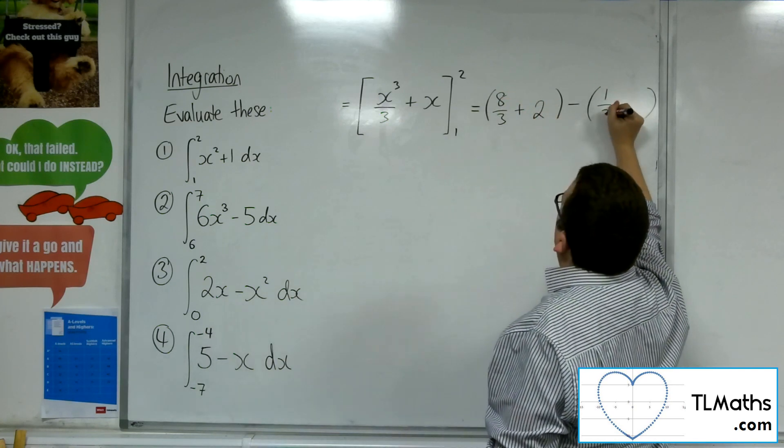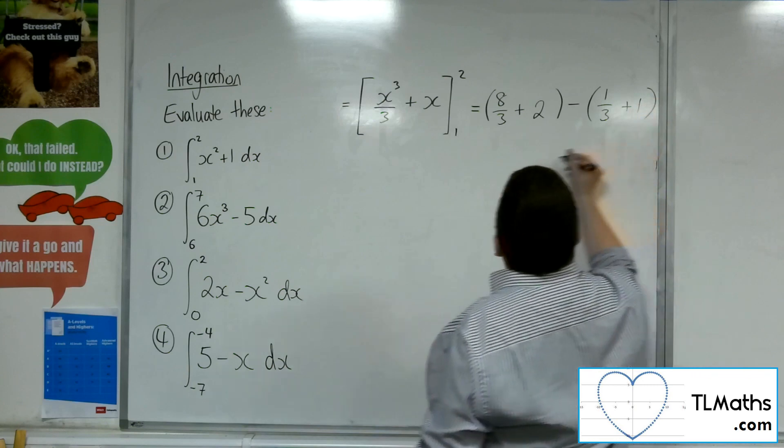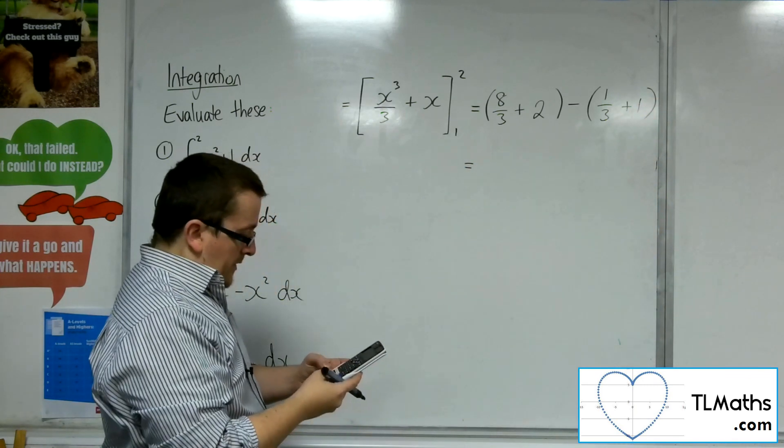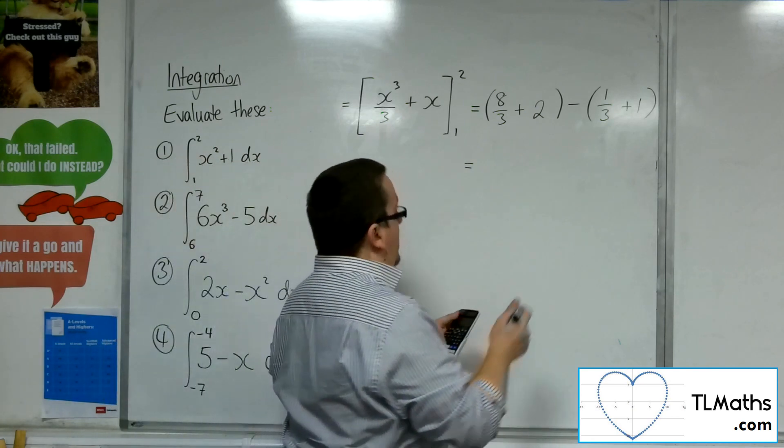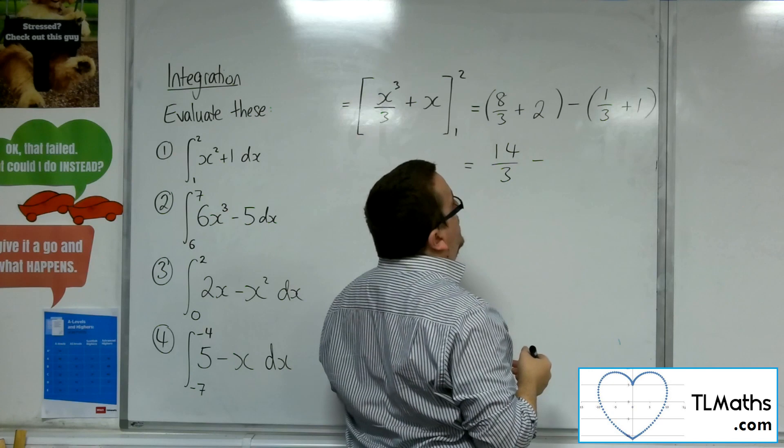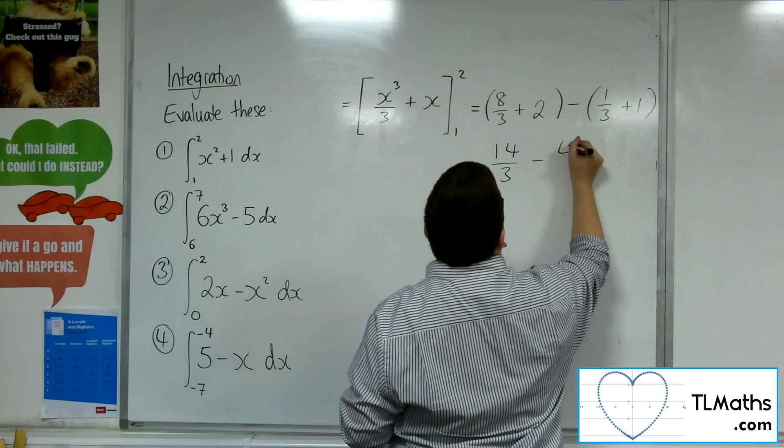Substitute in the 1, we're going to get 1 third plus 1. So we're going to have 8 thirds plus 2 in the first bracket, so 14 thirds, and 1 third plus 1 in the second bracket, which is 4 thirds.